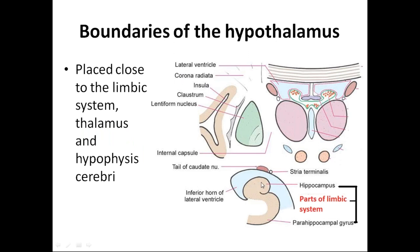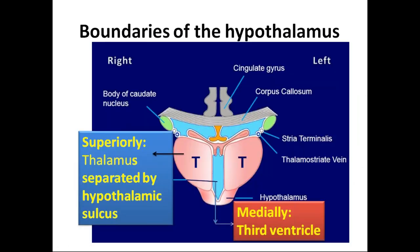In the coronal section showing where the hypothalamus is located: the lentiform nucleus, internal capsule, hippocampus, parahippocampal gyrus, and stria terminalis are visible. The hypothalamus is placed close to the limbic system, thalamus, and hypophysis (pituitary gland). Laterally it is related to the internal capsule. Superiorly, the hypothalamus is bounded by the thalamus, separated by the hypothalamic sulcus. Medially it is related to the third ventricle.